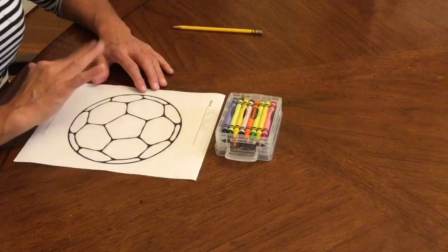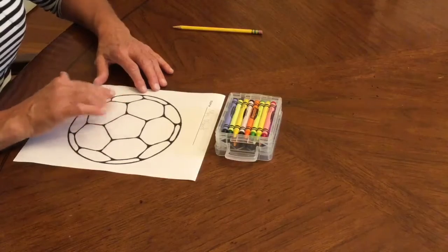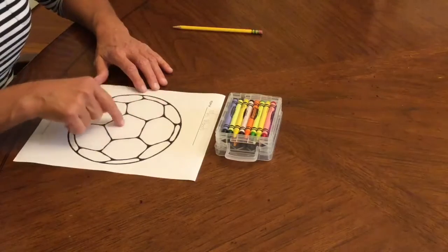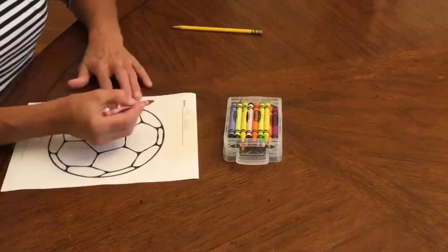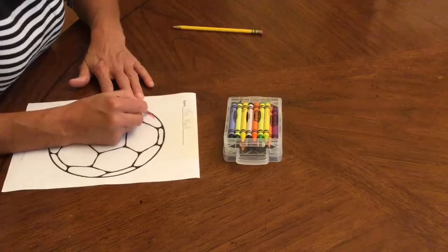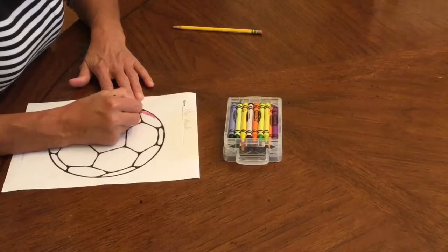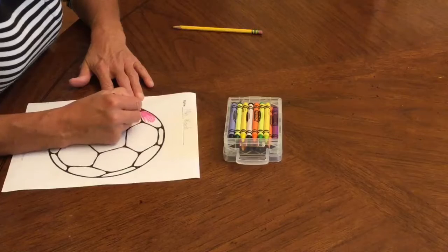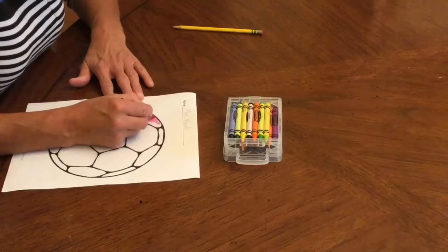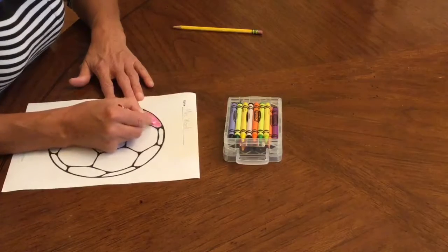Now you can color this soccer ball any color you want, but you want to make sure you color each area a different color. I'm going to start off with this red, and when you color you want to make sure you're coloring nice and neatly, and you're staying inside the lines, and you want to color all of the white areas. Alright, like so.